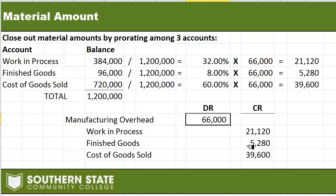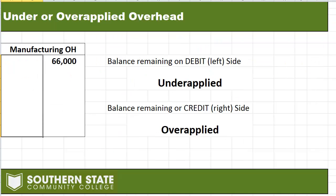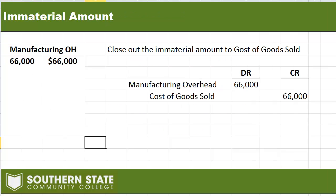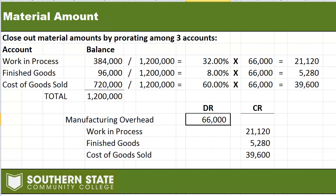That's how we handle an over-applied overhead amount. If we had the opposite — under-applied with an ending debit balance — the process would be exactly the same, only the journal entries would be flipped. The procedure is the exact same though. If you have any questions about this problem or any of the others you're working, let me know.